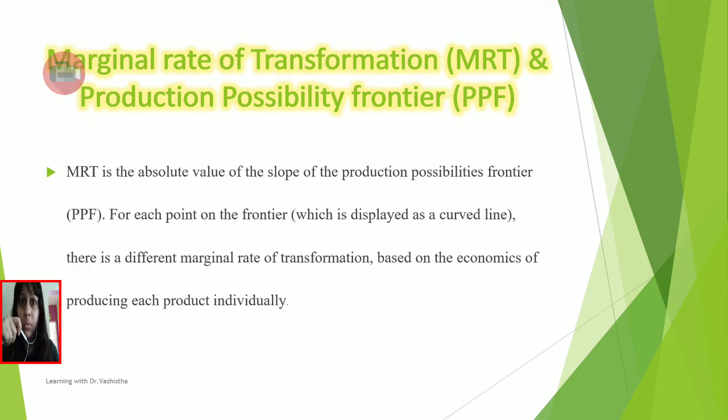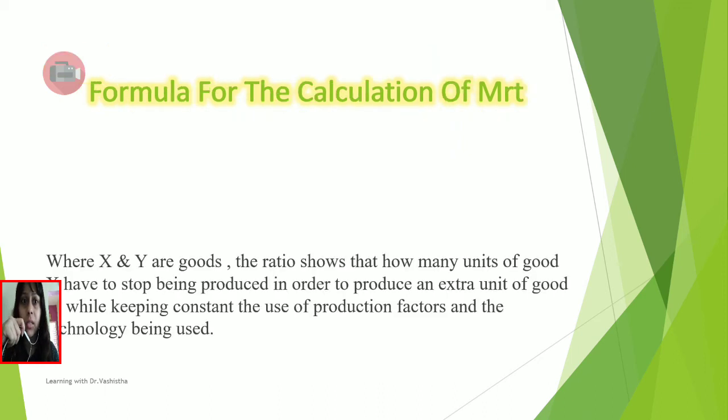What is the relationship between MRT and PPF? MRT is the absolute value of the slope of the production possibility frontier. For each point on the frontier, which is a curved line, there is a different marginal rate of transformation based on the economics of producing each product individually. These MRTs combine to form this PPF curve.